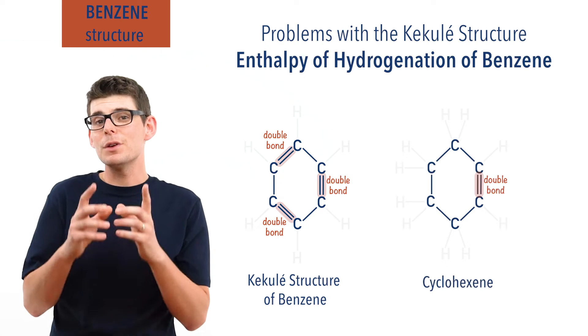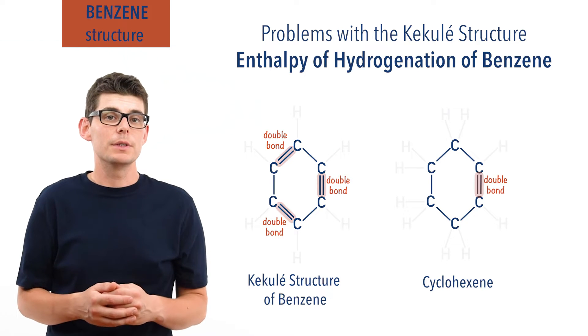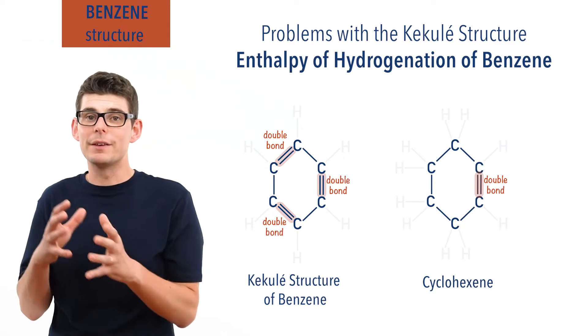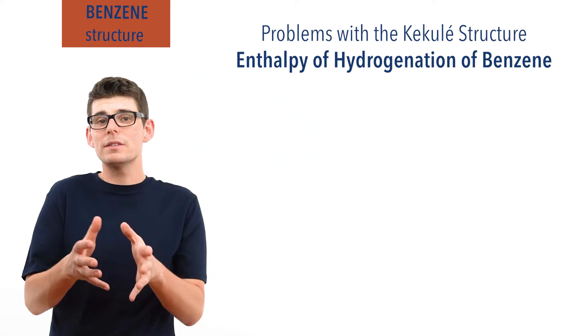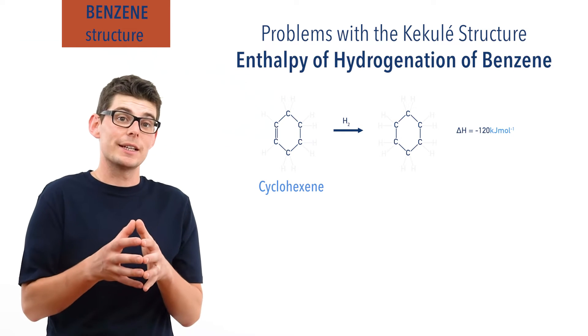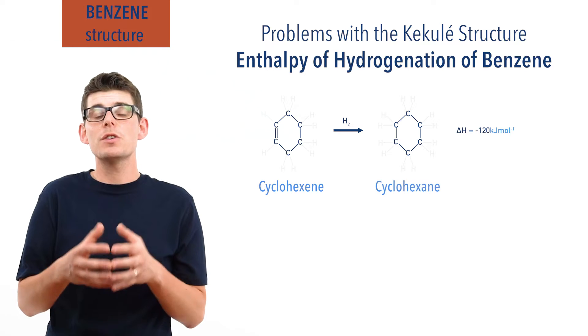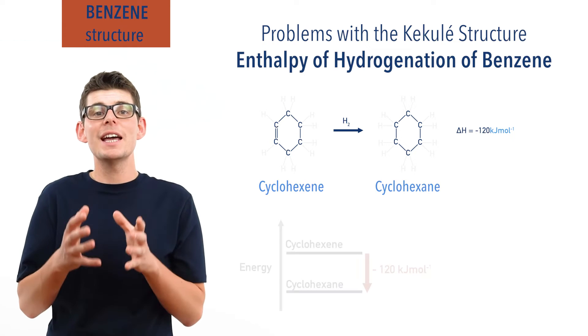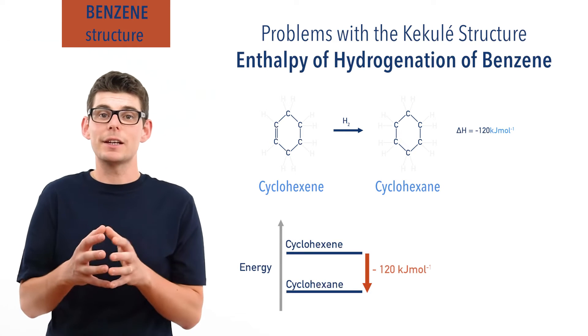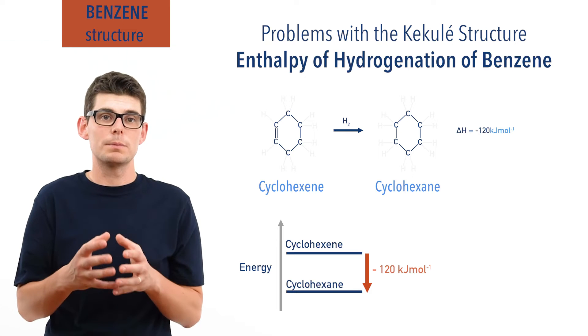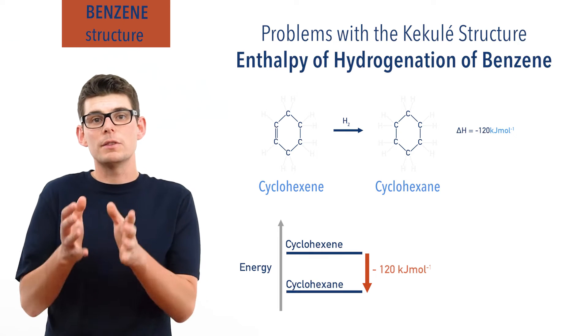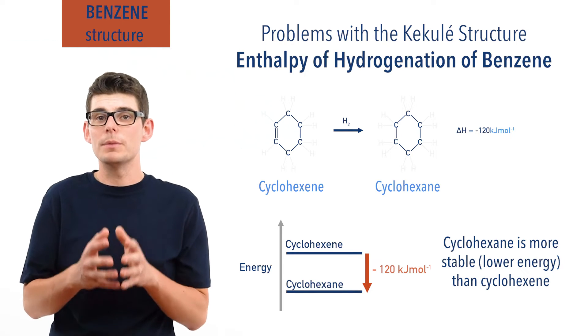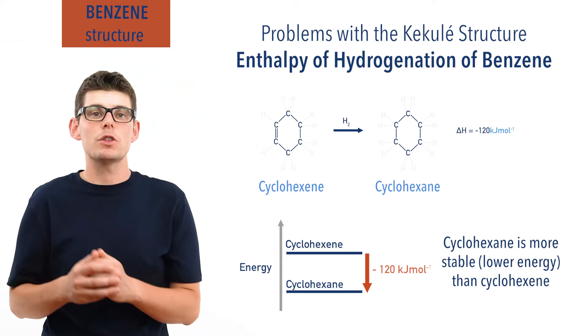Now in the Kekulé structure of benzene there are three double carbon bonds. In cyclohexene there is only one double carbon bond. It has the same shape as the Kekulé structure, a hexagon, it just has one double bond rather than three. When cyclohexene is hydrogenated and turned into cyclohexane, an enthalpy change of minus 120 kilojoules per mole occurs. Or in other terms, the difference in energy between cyclohexene and cyclohexane is minus 120 kilojoules per mole. Cyclohexane is more stable than cyclohexene. Remember saturated hydrocarbons are more stable than unsaturated hydrocarbons.